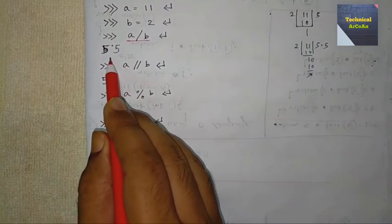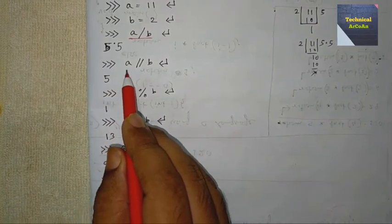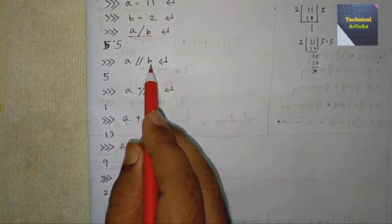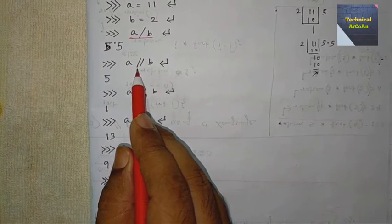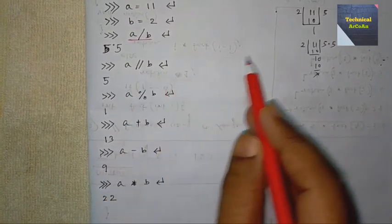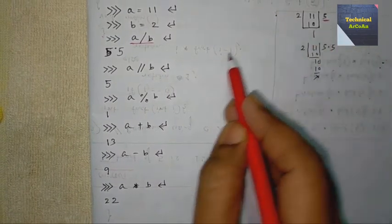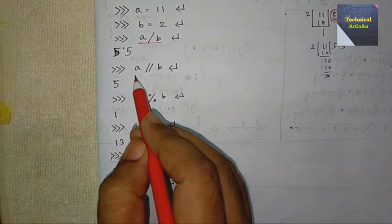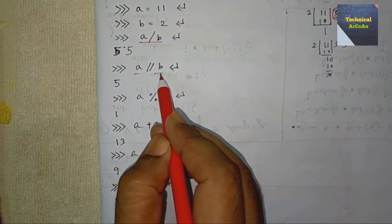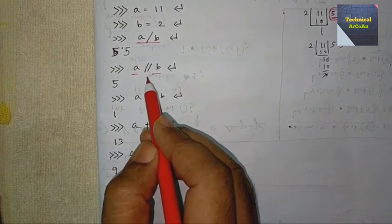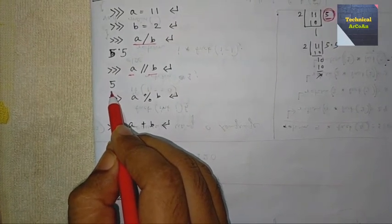Now we do integer division: a // b, which is double forward slash. What do we get? We get 5 only, because it is integer division - we only get the quotient and it should be integer. Remember, in that case both a and b should be integers. If a and b are floats, it's an error.